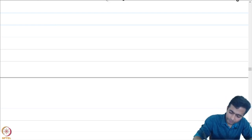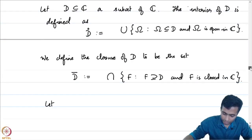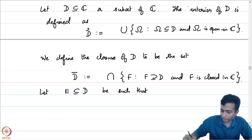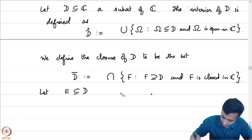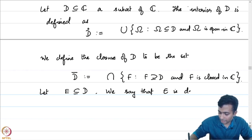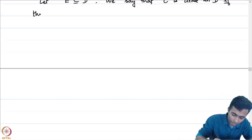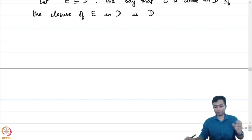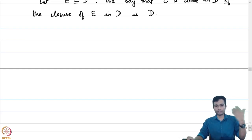Continuing the setup: let E be contained in D. We say that E is dense in D if the closure of E is D. I will be careful when I say this — we are taking the closure of E in D. In the complex plane, we can just say it is the closure of E in C intersected with D.